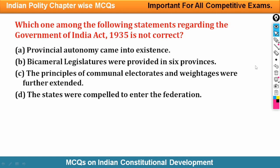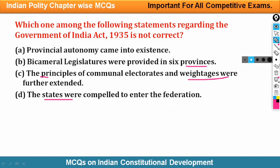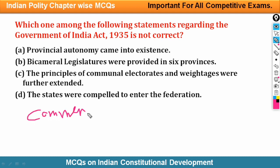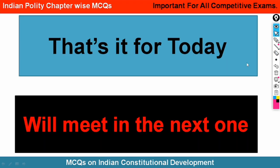Final question: Which among the following statements regarding the Government of India Act 1935 is not correct? Options include: (A) provincial autonomy came into existence; (B) bicameral legislatures were provided in six provinces; (C) the principles of communal electorate and diarchy were further extended; (D) the states were compelled to enter into the federation. The answer has not been provided — please write your answer in the comment section, and it will be checked in the upcoming video. This is the end of the video. We shall meet in the next video. Thank you all.